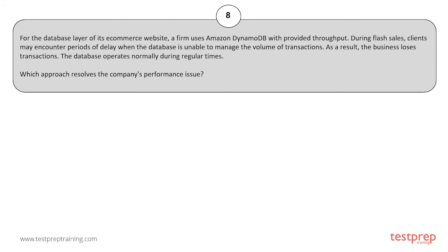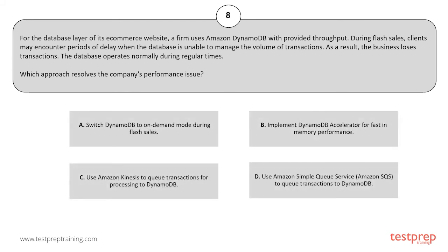Your options are: A. Switch DynamoDB to on-demand mode during flash sales. B. Implement DynamoDB Accelerator for fast in-memory performance. C. Use Amazon Kinesis to queue transactions for processing to DynamoDB. D. Use Amazon Simple Queue Service to queue transactions to DynamoDB.